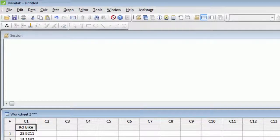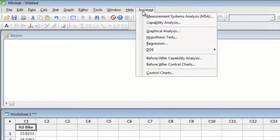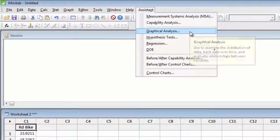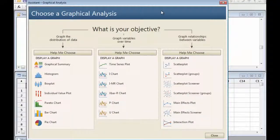Seeing your data in graphical form is always a good place to start, so select Assistant, Graphical Analysis. To look at the distribution of how long it takes Joel to bike to the office, click the Graphical Summary button.